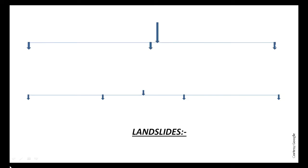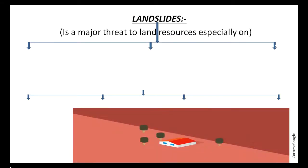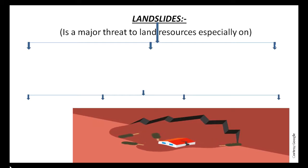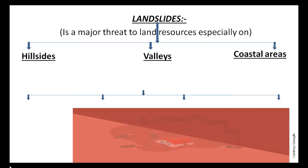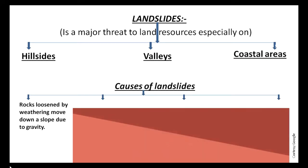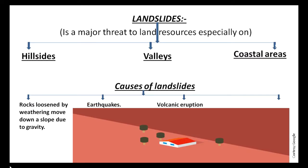Landslides are a major threat to land resources, especially on hillsides, valleys, and coastal areas. Causes of landslides include: rocks loosened by weathering moving down a slope due to gravity, earthquakes, volcanic eruptions, and violent explosions.